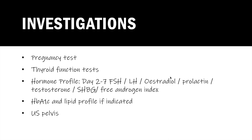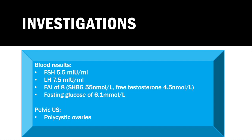If oestradiol had been low, a DEXA scan would also have been performed given the risk of osteoporosis and osteopenia. Looking through Amy's blood results: FSH and LH are normal, but her free androgen index is 8 — significantly elevated — and her fasting glucose is 6.1, also elevated. On pelvic ultrasound, polycystic ovaries were visible.